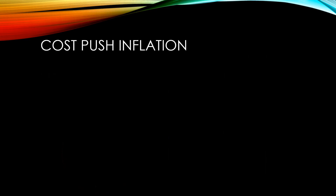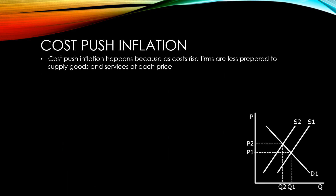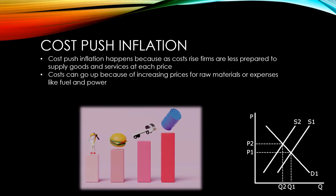Cost push inflation happens because as costs rise, firms are less prepared to supply goods and services at each price point. Costs can go up because of increasing prices for raw materials or expenses like fuel and power. The recent war in Ukraine has caused massive increases in prices for gas, oil and grains, leading to firms having to pass on those costs in the form of higher prices.